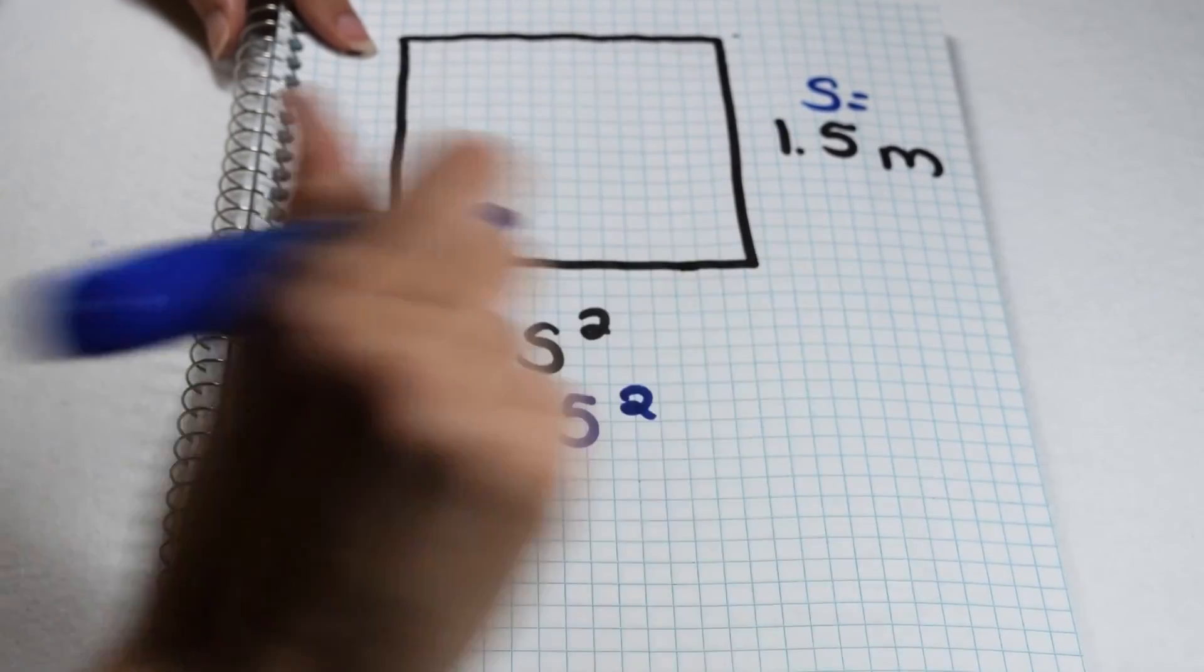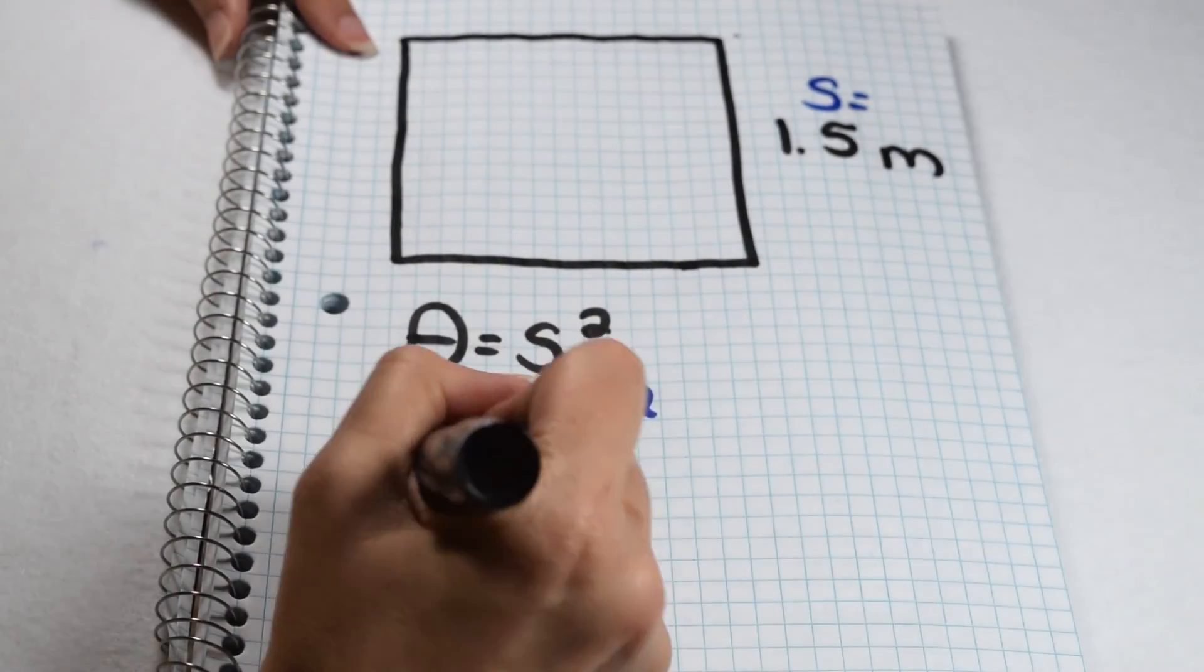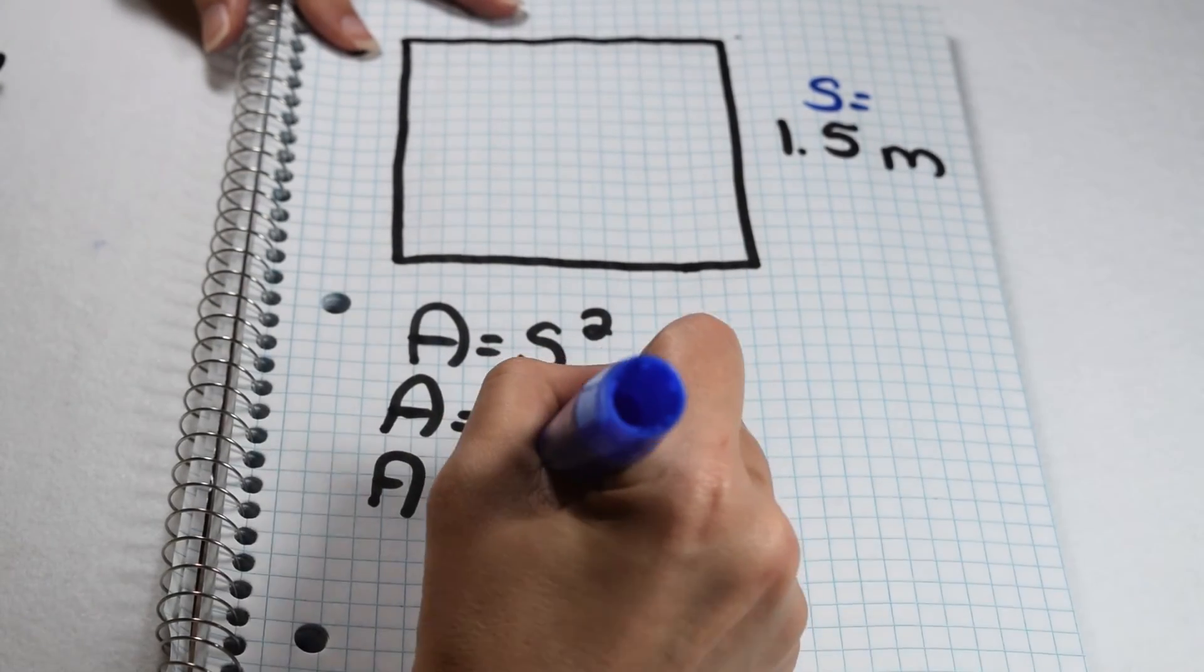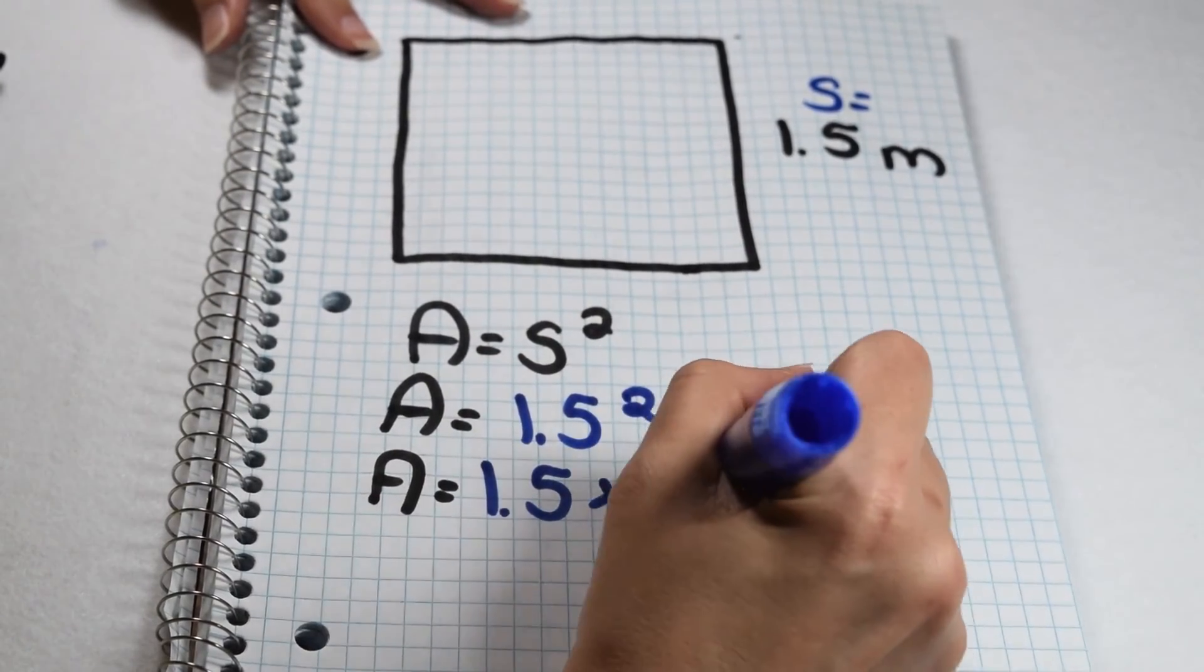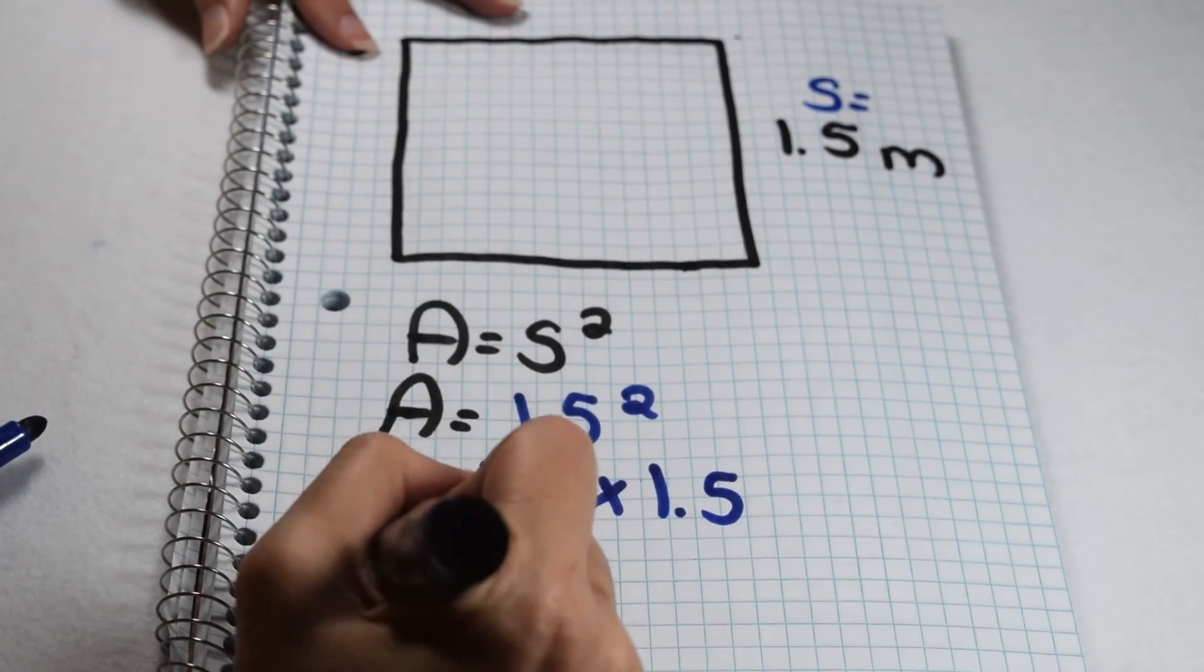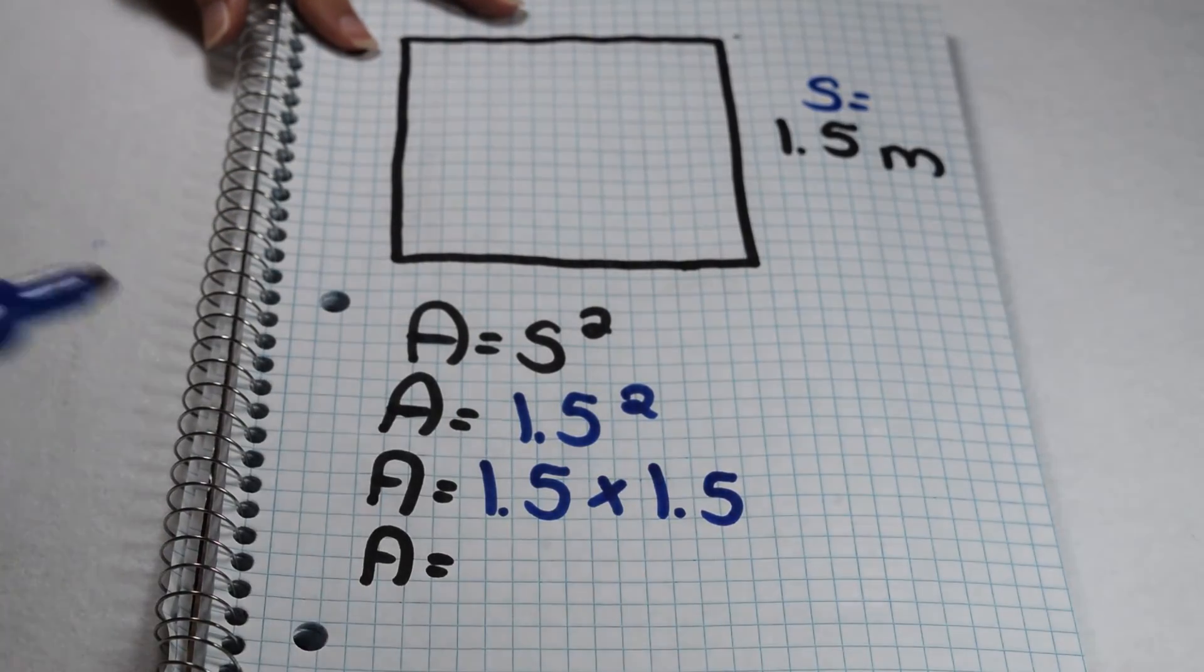In order to square a value, I need to multiply the number times itself, or 1 in 5 tenths times 1 in 5 tenths. I can treat this like a multiplying decimals problem. I'm going to think this as being 15 times 15 to give me 225.